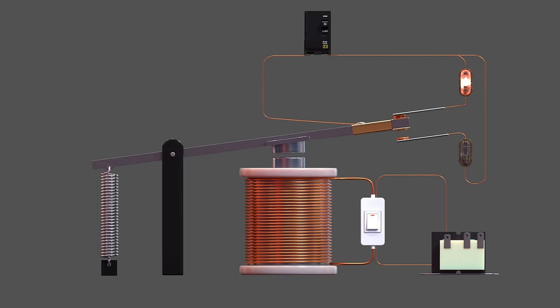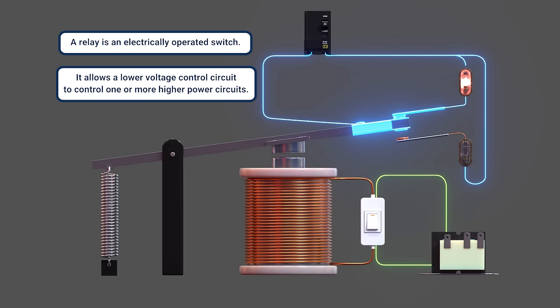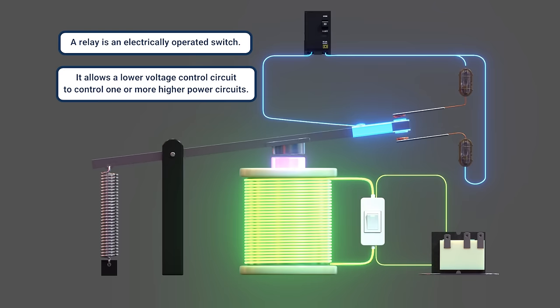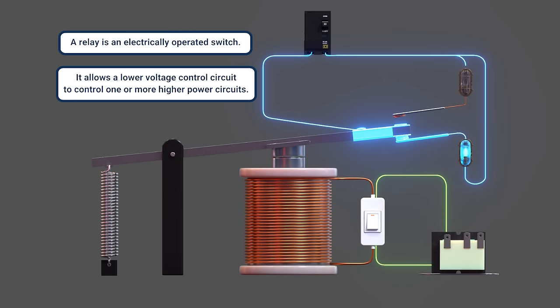A relay is an electrically operated switch. It generally allows a lower voltage control circuit to control one or more higher power or higher current circuits, functioning as a critical control mechanism to turn things on and off safely.